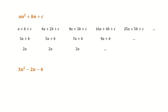Here is an example: 3n² minus 2n minus 4, a second-degree formula. If you plug n equal to 1, 2, and 3, you get a sequence. The differences between consecutive numbers are 7, then 13, then 19, then 25, and so on. Now if you do it again, you get a constant sequence of 6, because the difference between 7 and 13 is 6, between 13 and 19 is 6, and so on.